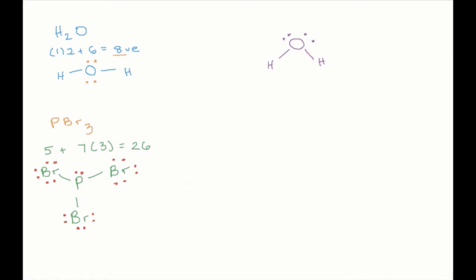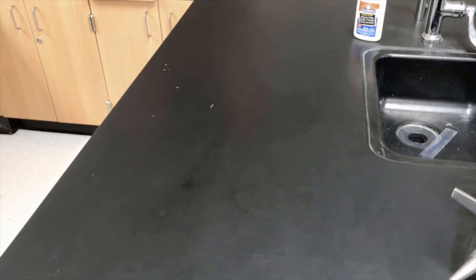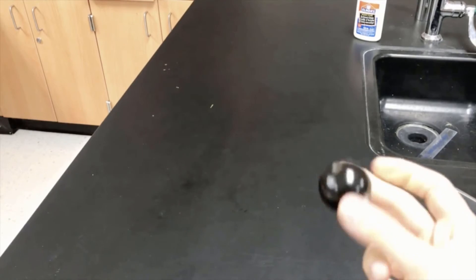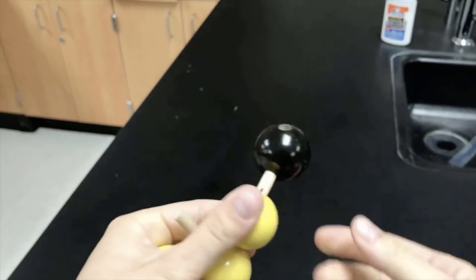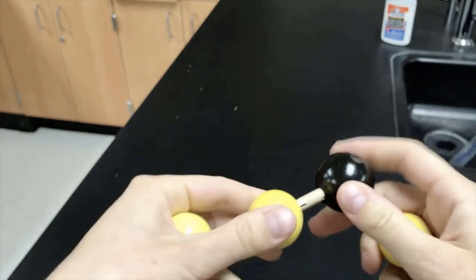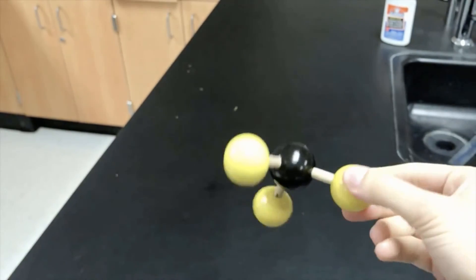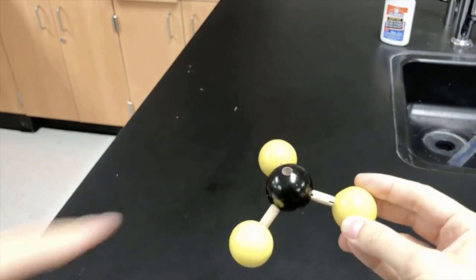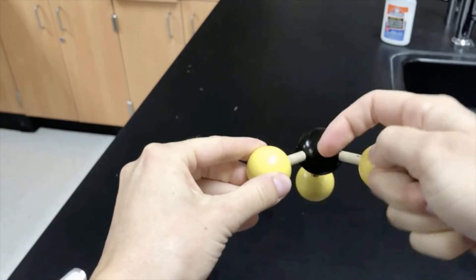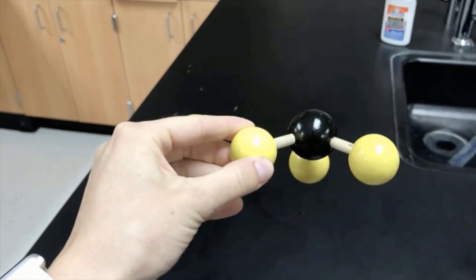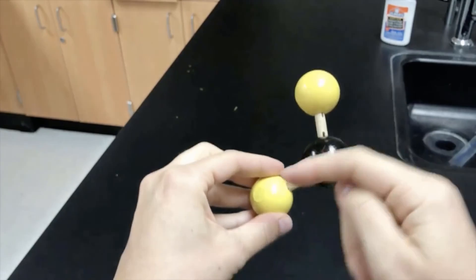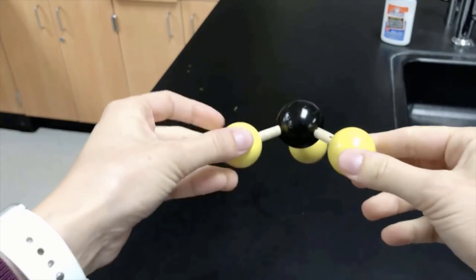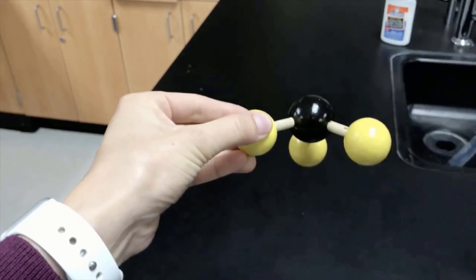Now let's look at it using the model kit. For PBr₃ I'm going to take my phosphorus — the black ball. Remember, you've got four different possible places to place your atoms. I'm going to put one bromine here, one bromine there, and one bromine there. Notice you've got one lone pair of electrons here. The way we're going to draw this is with the bromines moving downwards to try to show that 3D shape, because notice it isn't flat. If you drew one up and one down, that would imply it was flat, but it's not.